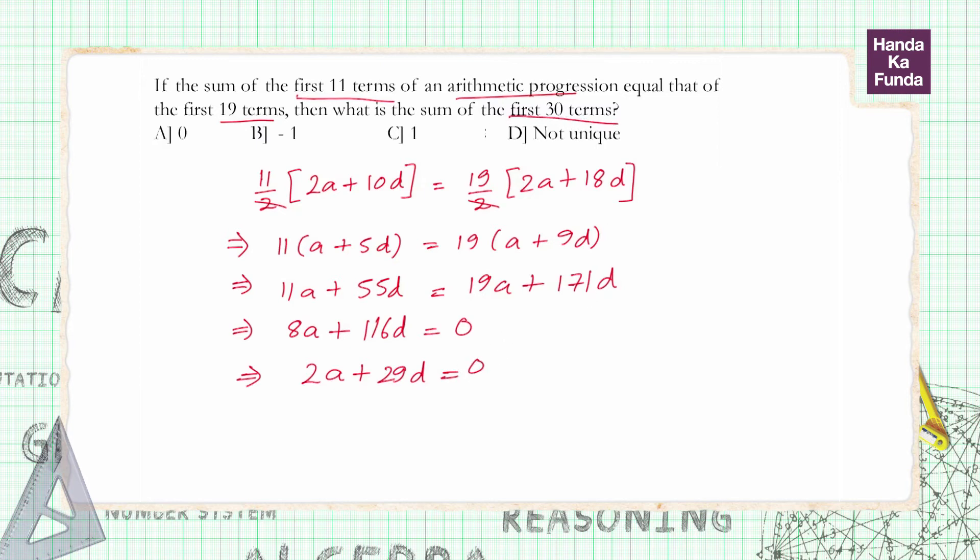Now let us look at what the question is asking. The question is asking for the sum of the first 30 terms. So what is the sum of the first 30 terms? 30 by 2 into 2A plus N minus 1 into D or 2A plus 29D.